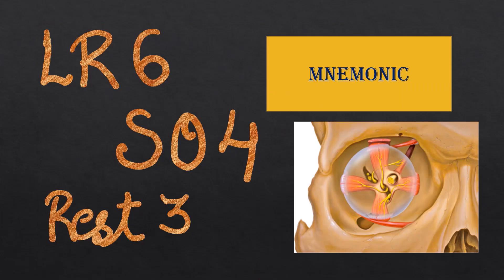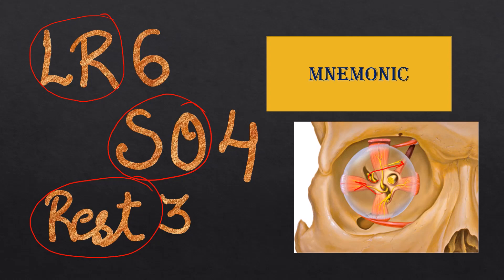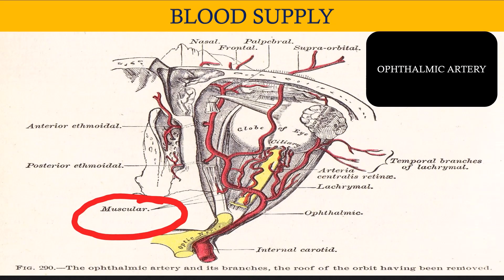The mnemonic to remember nerve supply is LR6, SO4, rest by 3: the lateral rectus is supplied by the sixth cranial nerve (abducent), the superior oblique by the fourth cranial nerve (trochlear), and all remaining extraocular muscles are supplied by branches of the third cranial nerve (oculomotor). The superior division of the third nerve supplies the superior rectus and levator palpebrae superioris; the inferior division supplies the medial rectus, inferior rectus, and inferior oblique.